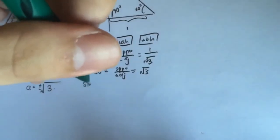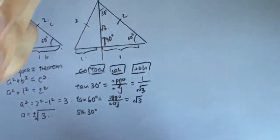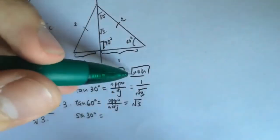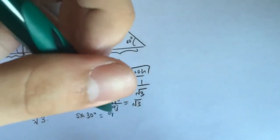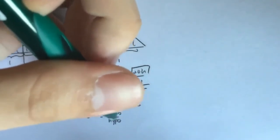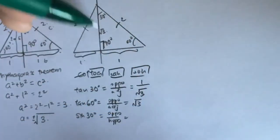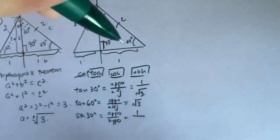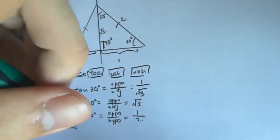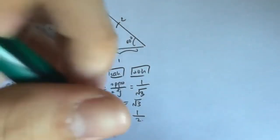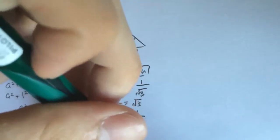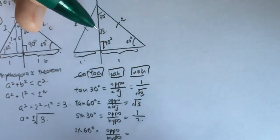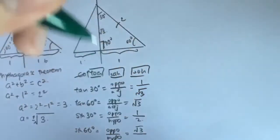For sine 30, we know that sine is opposite over hypotenuse. The opposite is 1 unit and the hypotenuse is 2, so sine 30 equals one half. For sine 60, it's also opposite over hypotenuse — 60 degrees is at the top, the opposite is square root 3 and the hypotenuse is 2, so sine 60 equals square root 3 over 2.